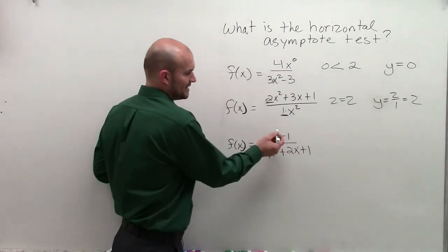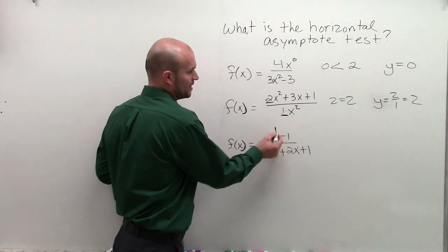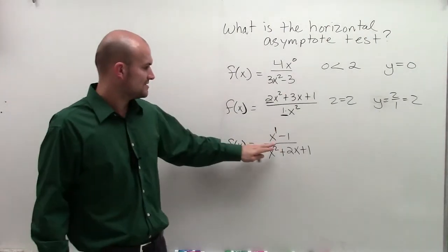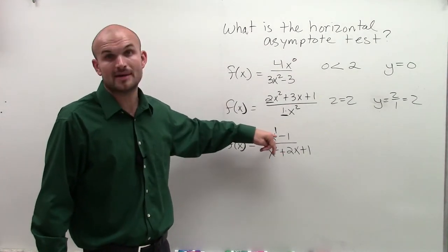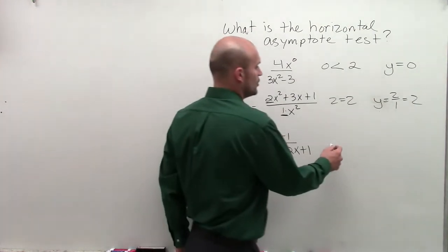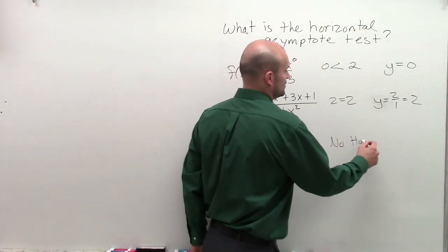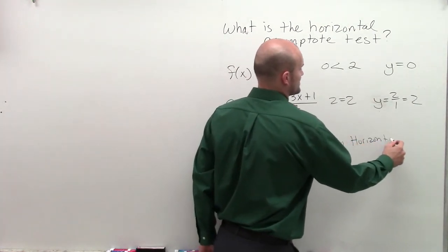Now we look at the exponent, and here I can write an exponent of 1. And now since my degree in my denominator is larger than the degree in my numerator, I have no horizontal asymptote.